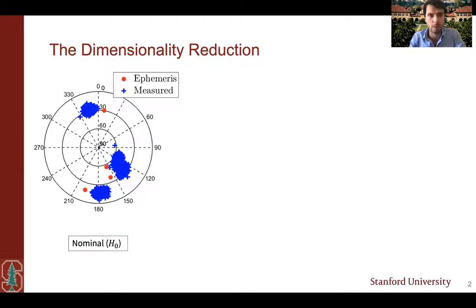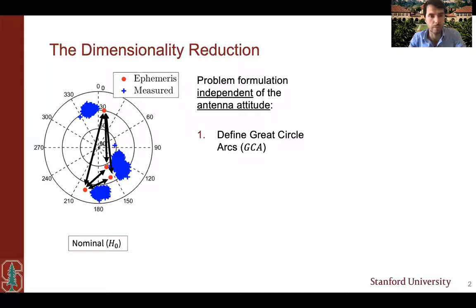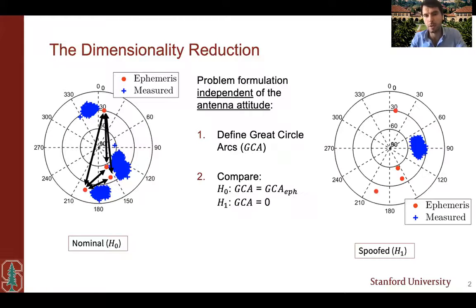The approach we propose, however, is independent of the antenna attitude. Specifically, we look at the great circle arcs. We measure the great circle arcs between the measurements, compare them to the great circle arcs between the ephemeris-based directions. Under nominal conditions, they should match fairly closely. Under spoof conditions, however, the great circle arcs should be zero since the direction measurements should all align. And that's the key difference here, that we can actually define exactly what we expect to see under spoof conditions.